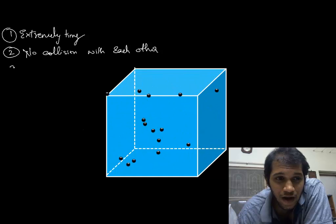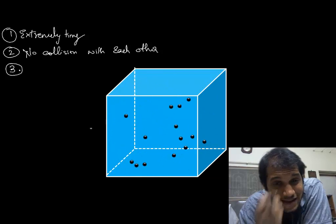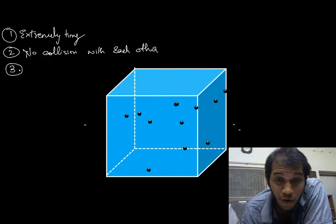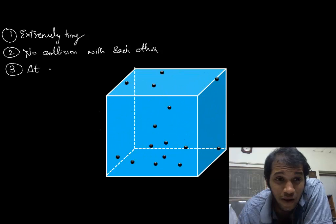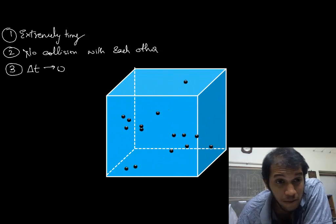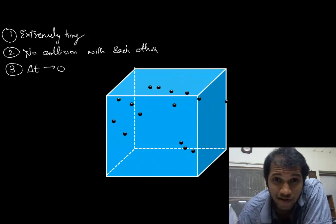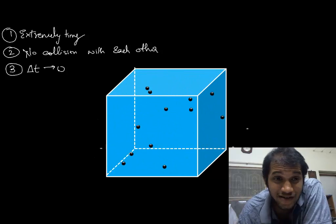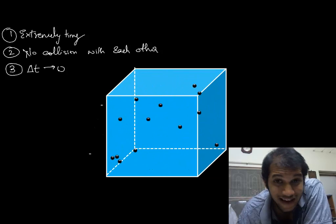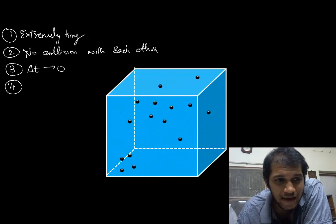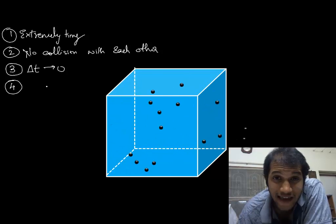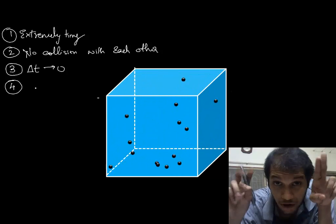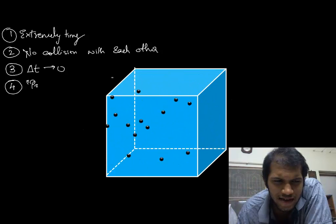Another assumption: when these molecules collide with the walls, the time of contact — I'll call it delta t — is very small, almost zero. Take a tennis ball and bounce it off a wall and you'll see it bounces back in an instant. So the time of contact is extremely small even for macroscopic objects; clearly for gases it can be neglected. Another assumption is that when atoms collide with the walls they don't lose any energy.